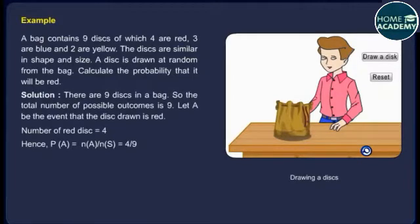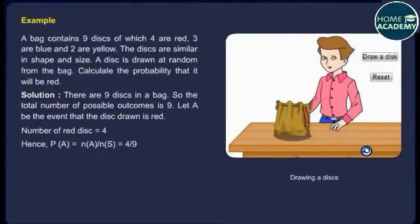Solution. There are 9 disks in a bag, so the total number of possible outcomes is 9. Let A be the event that the disk drawn is red. Number of red disks is equal to 4. Hence, P(A) = N(A) / N(S) = 4/9.